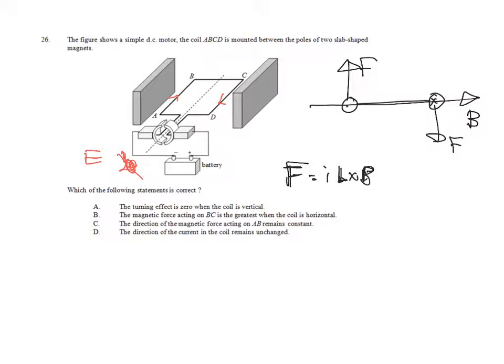Let's check the options one by one. The direction of the current in the coil remains unchanged. Please notice that there is a commutator. Therefore, after half a cycle, when the orientation becomes as shown, you will find that the current will be flowing from B to A. However, initially it is flowing from A to B. Further, the direction of the current has been changed. Therefore, the last option must not be the answer.